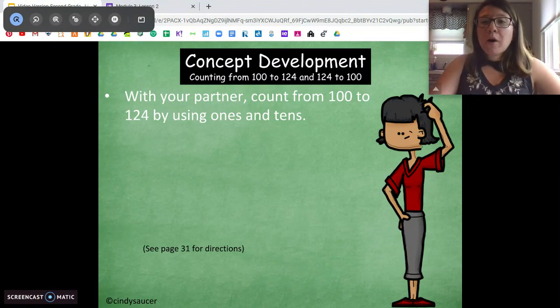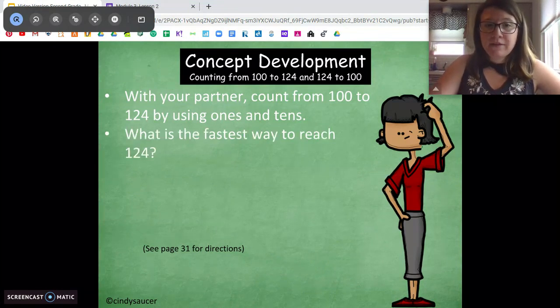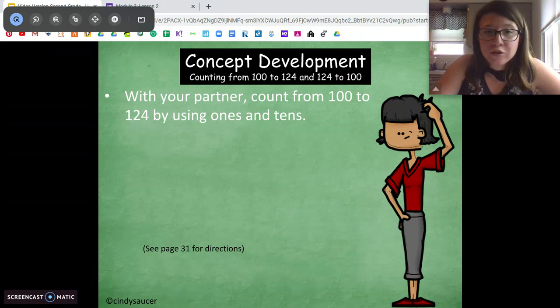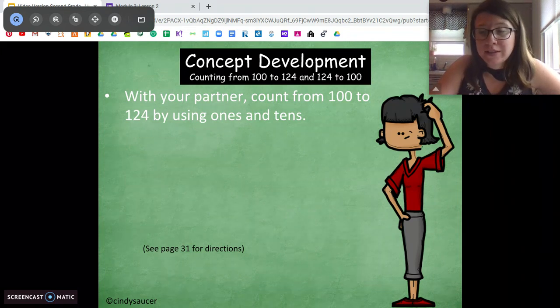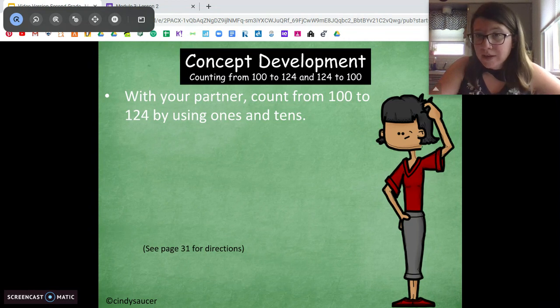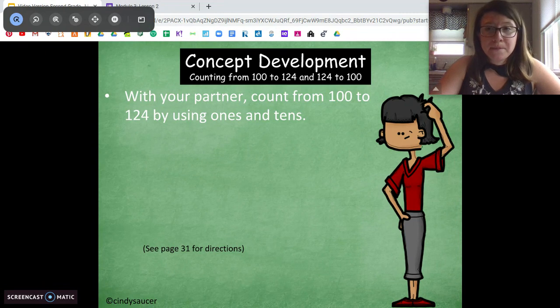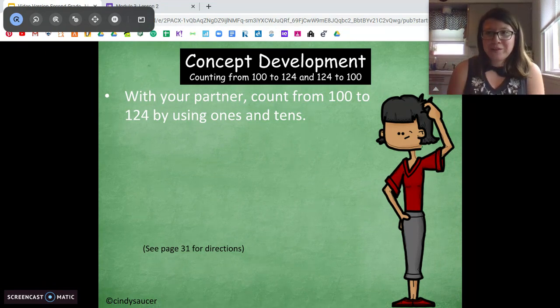So I'm going to have you pause the video after I give these directions. I want you to count from 100 to 124 using tens and ones. Work with somebody at home with it. Count from 100, start at 100, and then count to 124 using tens and ones. See if you can figure out the fastest way to do it. Go ahead. Come back to me when you're ready.